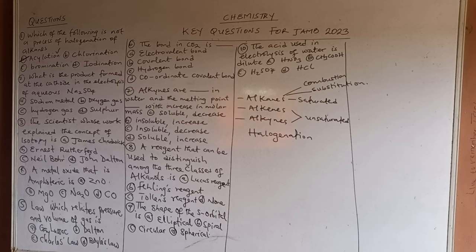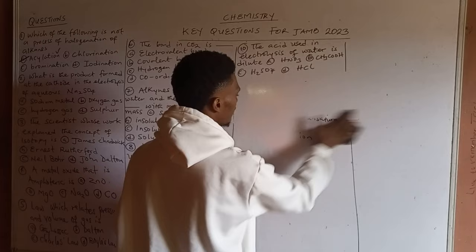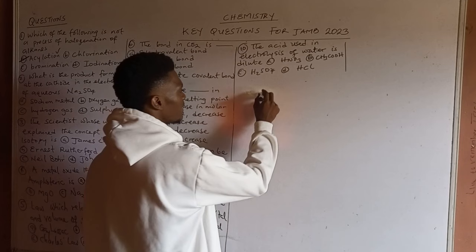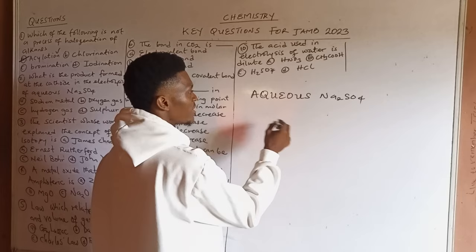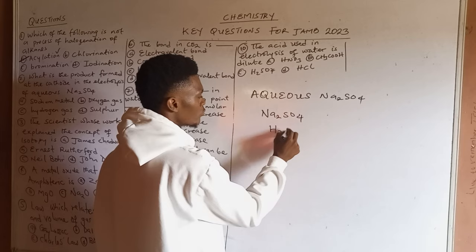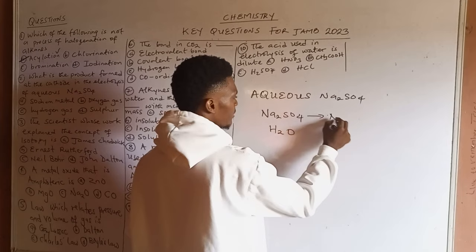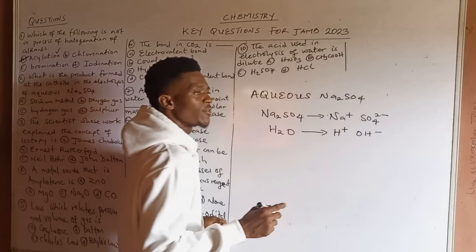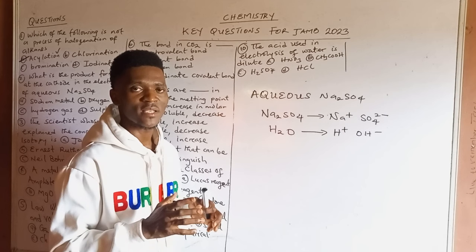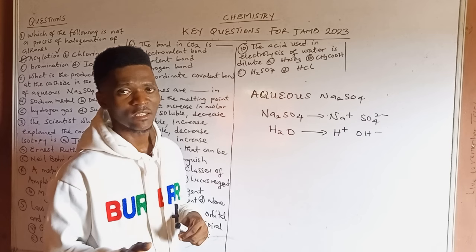Question 2: What is the product formed at the cathode in the electrolysis of aqueous Na2SO4 (sodium sulfate)? This question comes from electrolysis. Aqueous Na2SO4 means there is water content, so you have Na2SO4 and H2O. During electrolysis, Na2SO4 ionizes to Na+ and SO4²⁻, and water ionizes to H+ and OH⁻. Electrodes are materials — wires, rods, or plates — through which current enters or leaves the electrolyte.